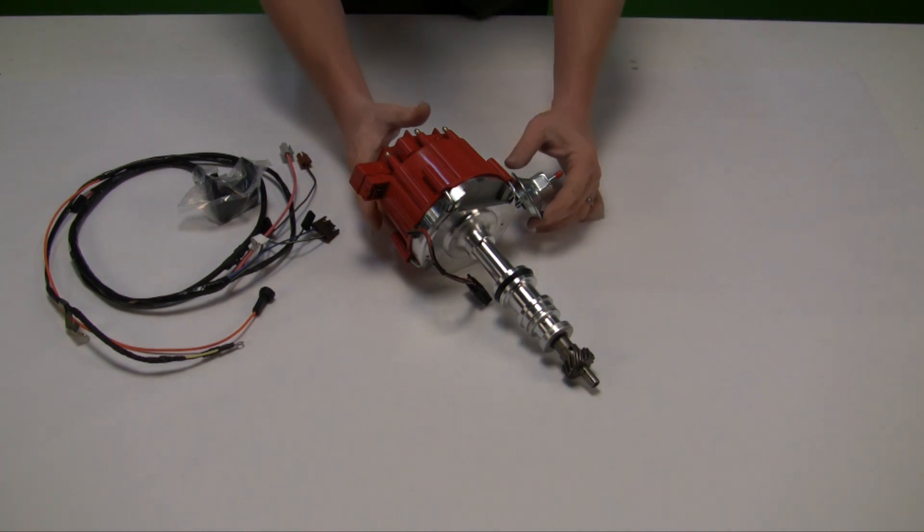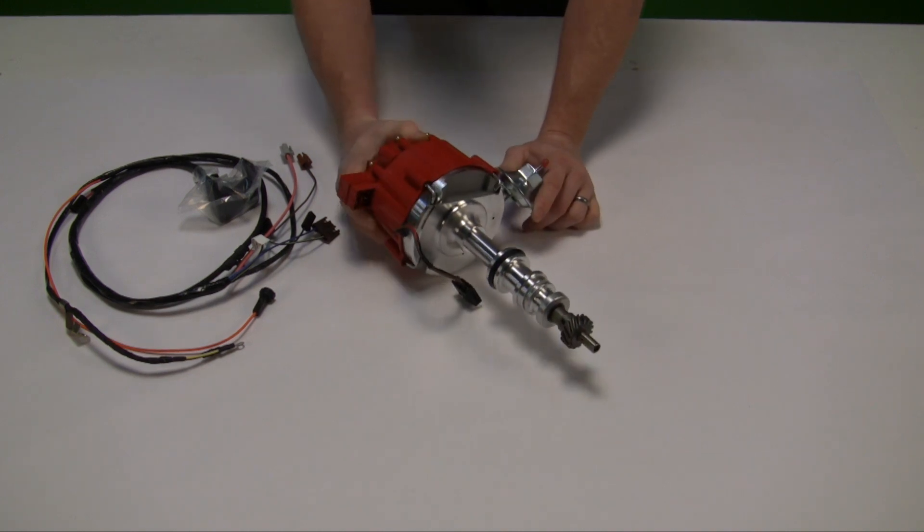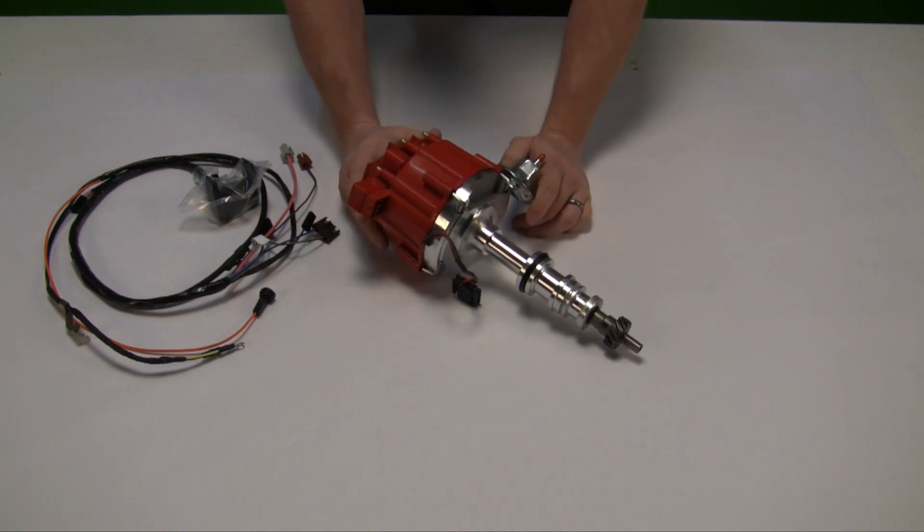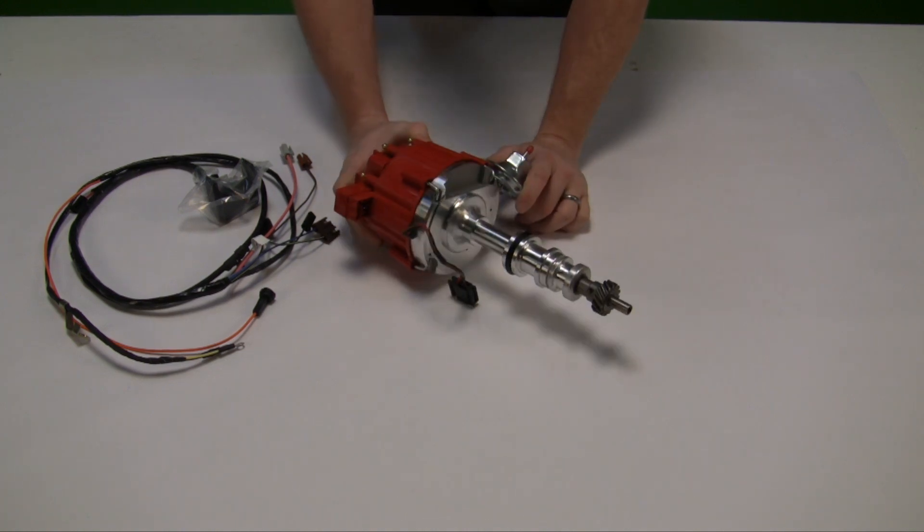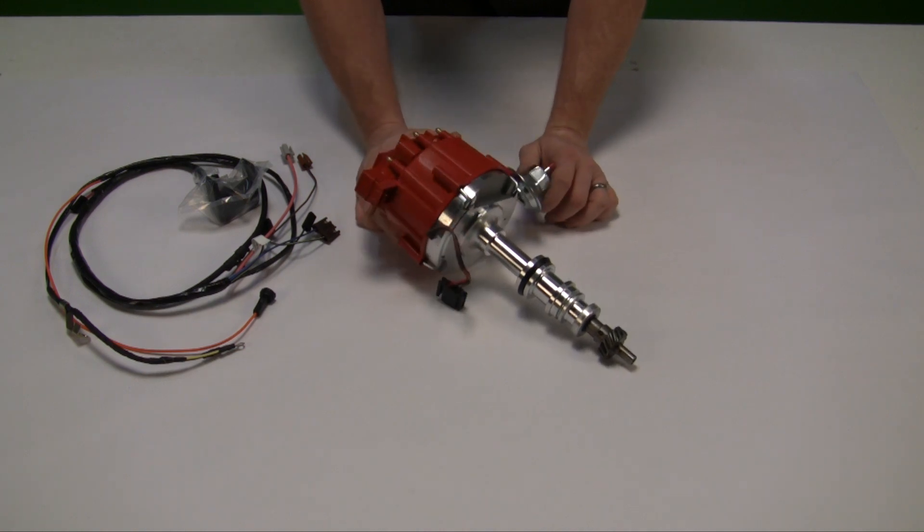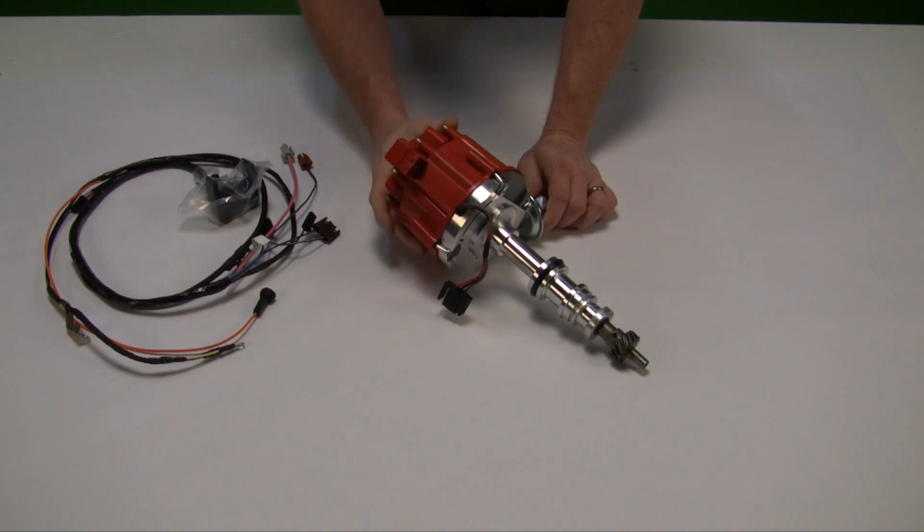Right here we have a GM style large cap HEI distributor. This one happens to be made for a Ford FE motor. These are available in this style with billet shafts through many different manufacturers for just about any motor size. What I want to show you is how easy these are to hook up.